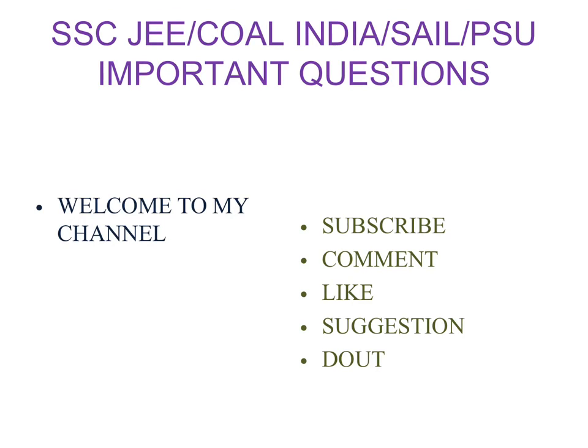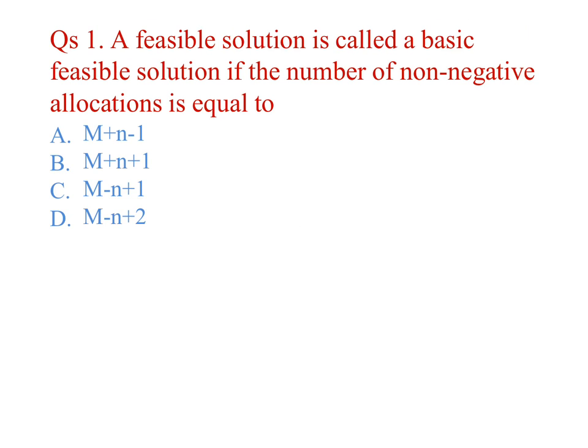Hello friends, welcome to my channel. Question one: A feasible solution is called a basic feasible solution if the number of non-negative allocations is equal to... m is number of rows, n is columns. It should be m plus n minus 1 for basic feasible solution.